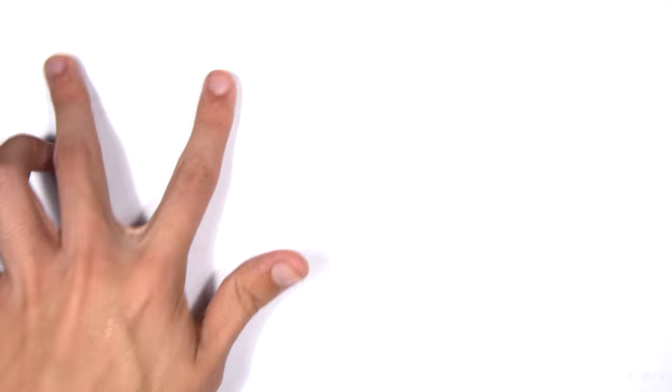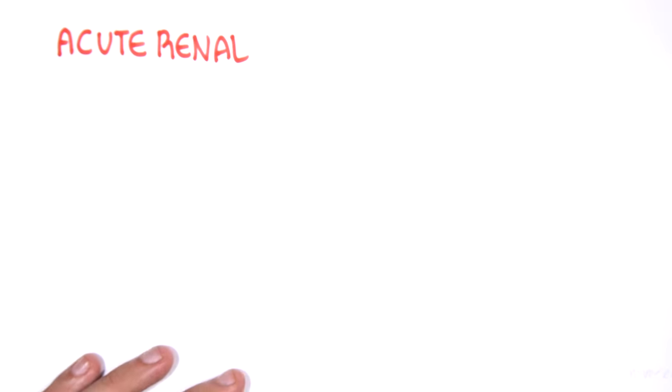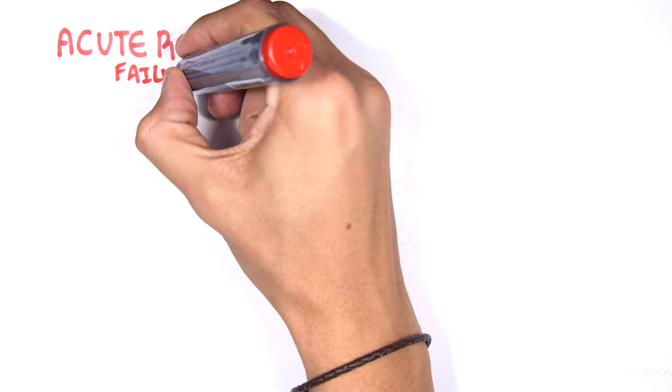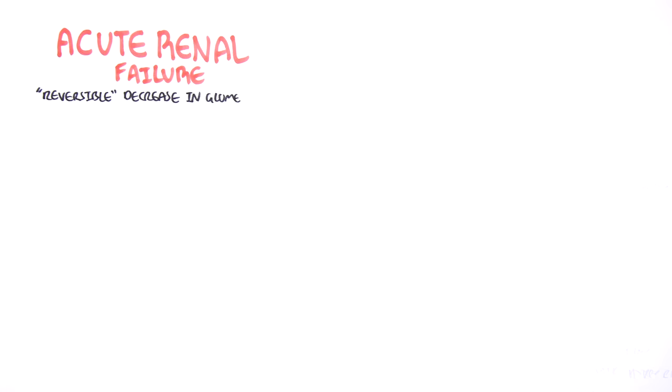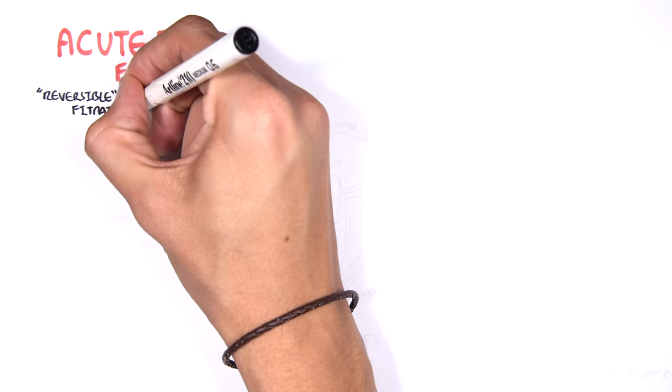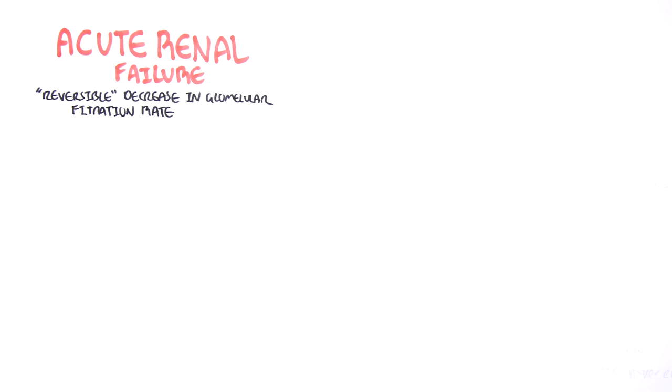In this video, we're going to look at acute renal failure, which is defined as a decrease in glomerular filtration rate. And I put reversible in quotations because it may be reversible.